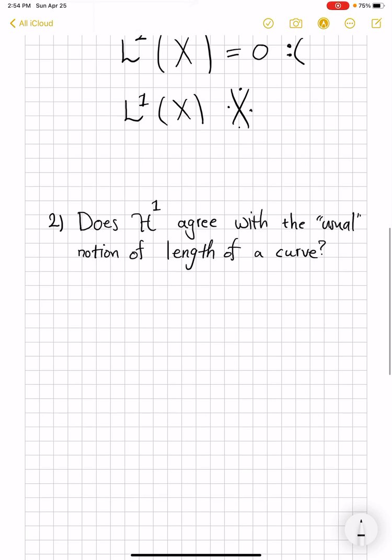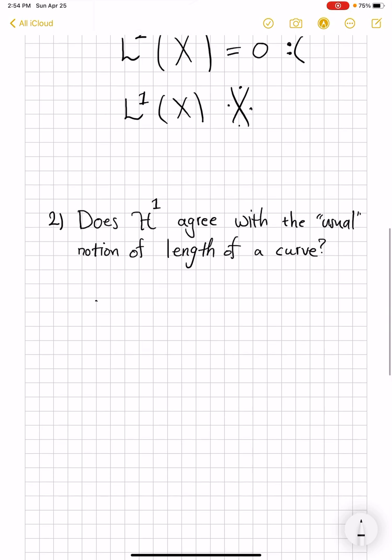Question number two is, we have constructed this H¹ out of all these infimums and supremums and limits, but is it really agreeing with our previous notions of length? If I apply this H¹ to a line segment, do I really get back the length of that? If I apply that to a circle, do I get the perimeter of the circle? And the answer is yes, so it does agree with them.